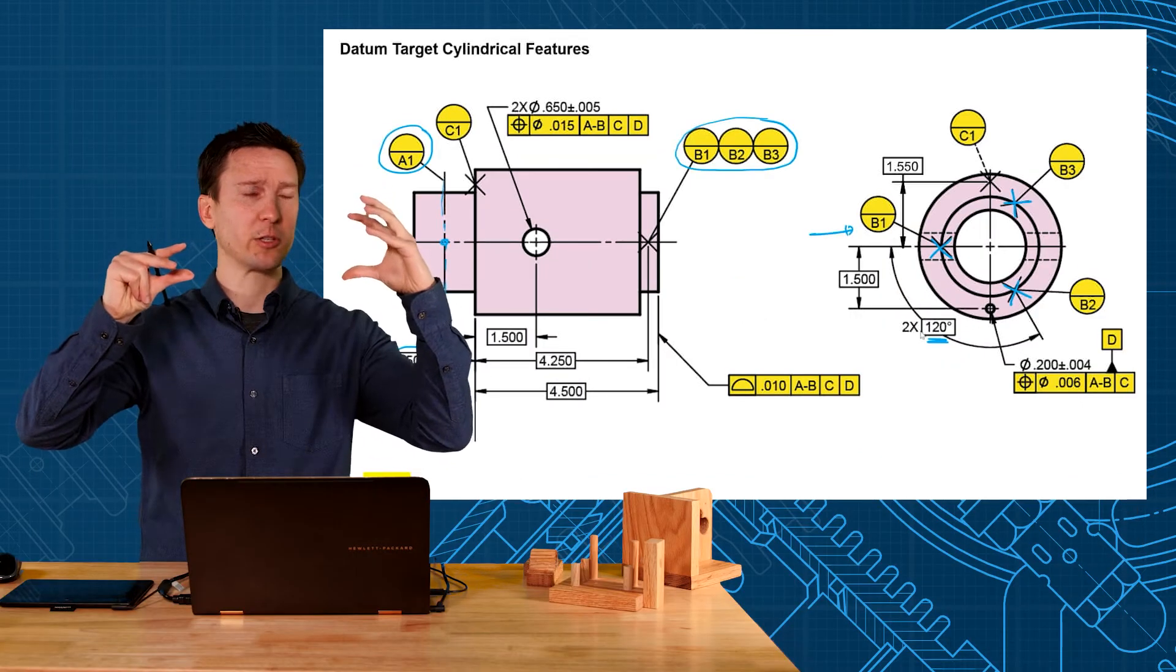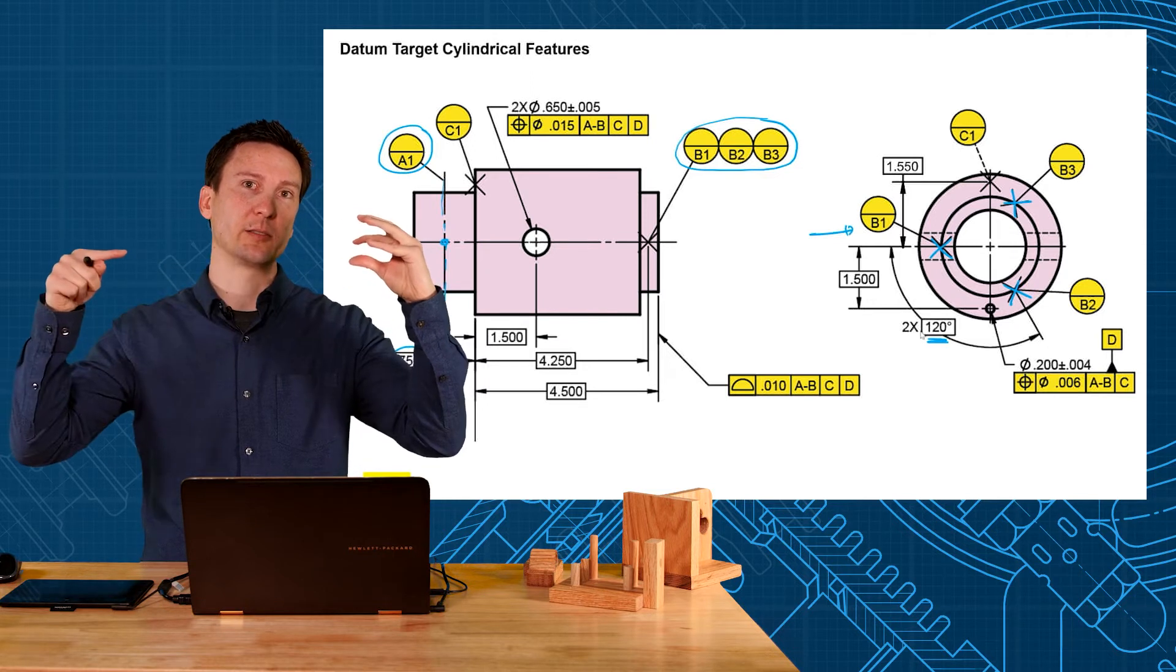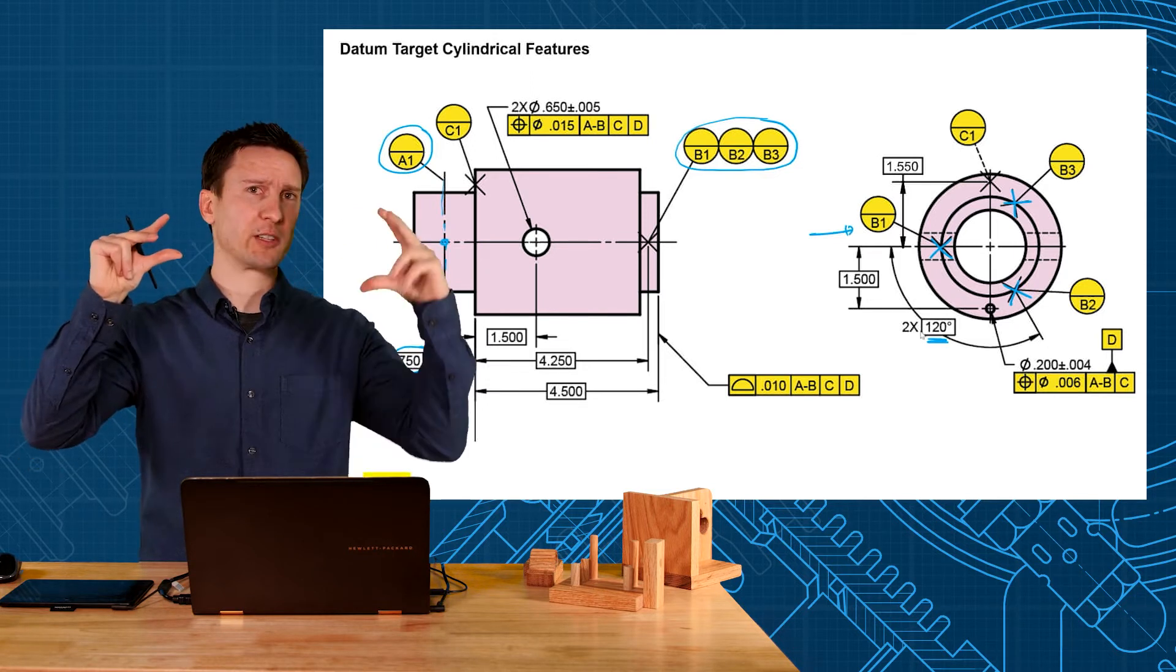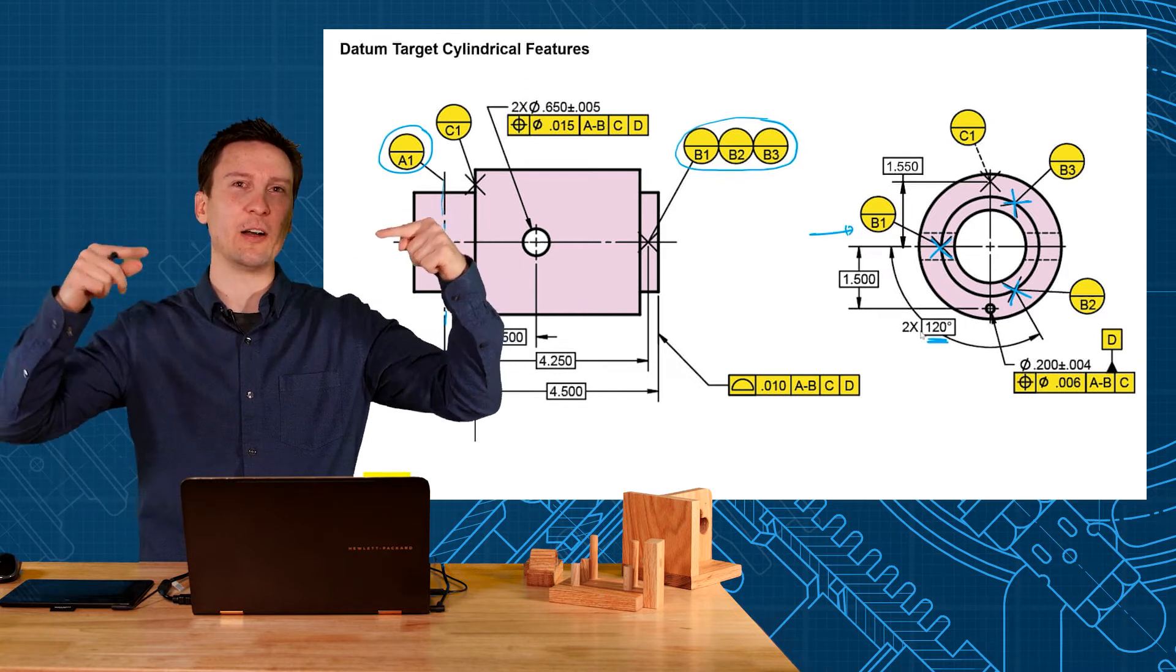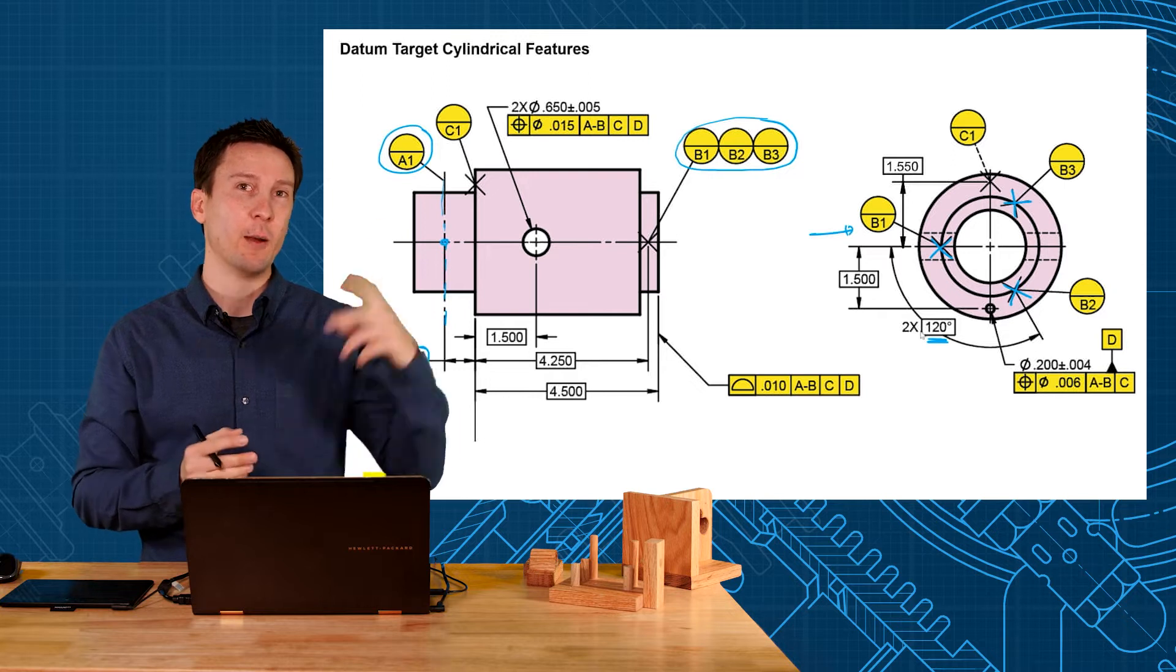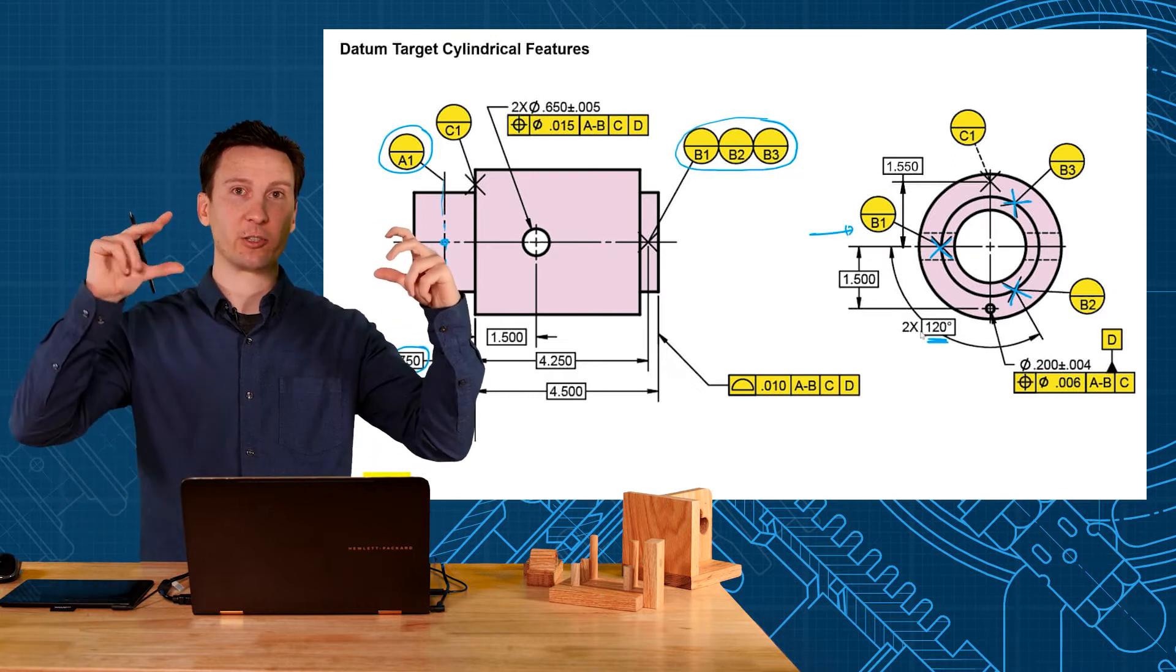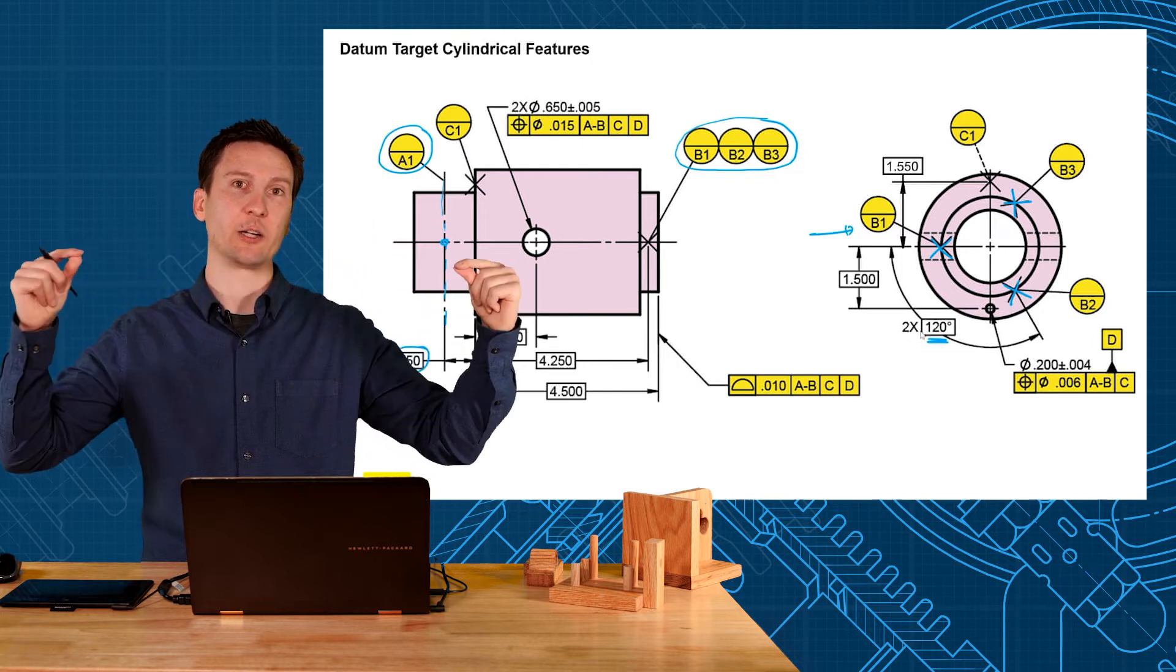When you do that circular cross-section on this side and the three points on this side, that will create your A-B axis. Now you could do three targets on this side, three targets on this side, or a circular element here and a circular element here. As a training exercise, I want to show both examples in one slide. Either circular cross-sections or two sets of three points to establish your A-B axis.